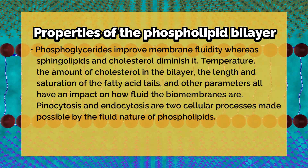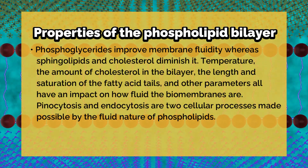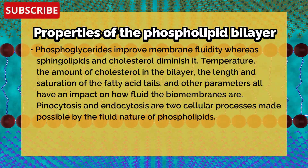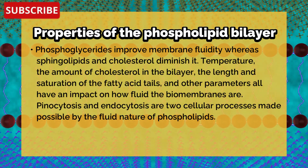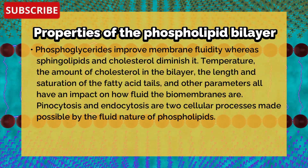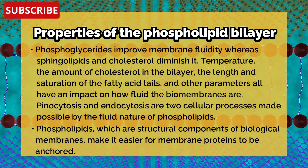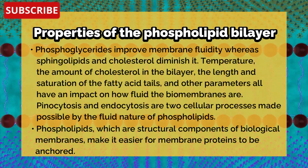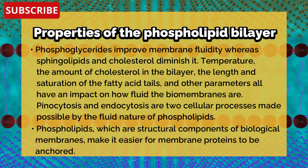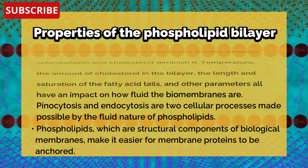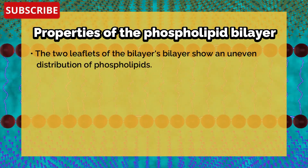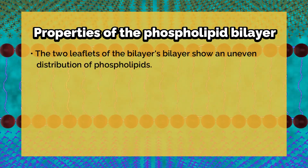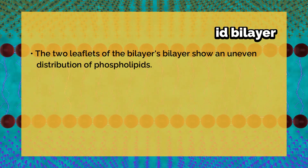Pinocytosis and endocytosis are two cellular processes made possible by the fluid nature of the phospholipids. Phospholipids, which are structural components of biological membranes, make it easier for membrane proteins to be incorporated. The two leaflets of the bilayer show an uneven distribution of phospholipids.